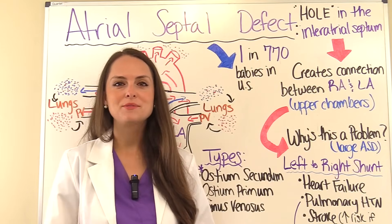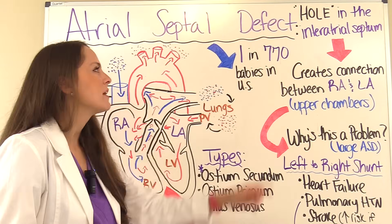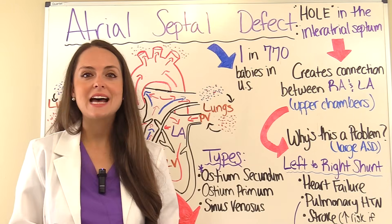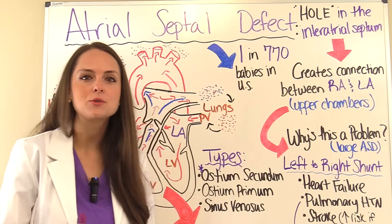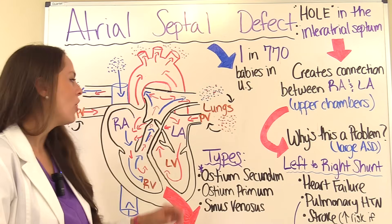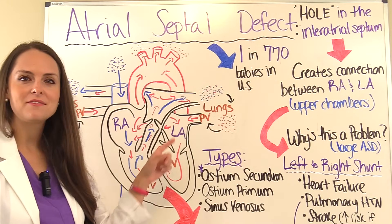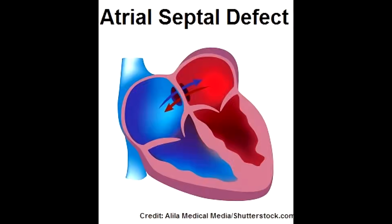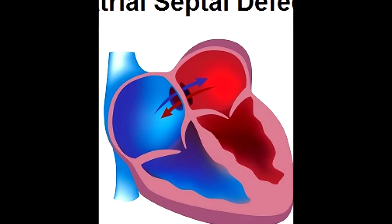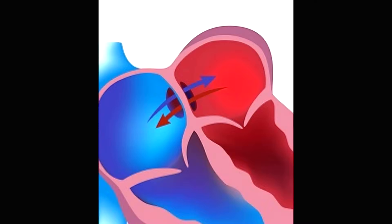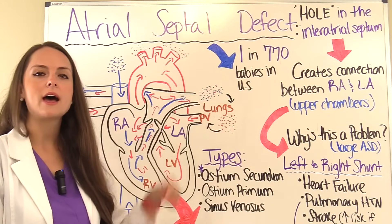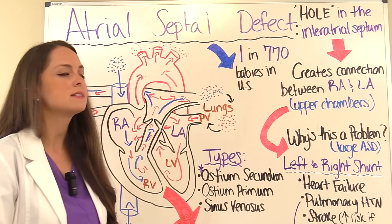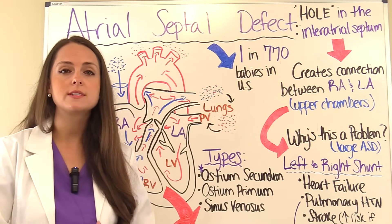What is an atrial septal defect? This is where there is a hole in the intra-atrial septum, and what this does is it creates a connection between the upper chambers of the heart, which are the right atrium and the left atrium. After birth there should not be a connection between these two chambers. According to the CDC.gov, one in every 770 babies born in the United States will have an atrial septal defect.